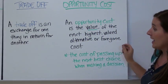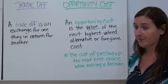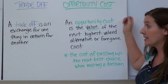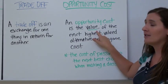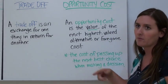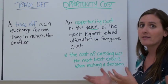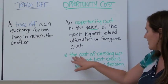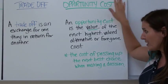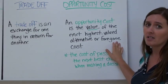A trade-off is an exchange for one thing in return for another — what you give up in order to make one choice. An opportunity cost is the value of the next highest value alternative, or foregone cost. So if you make a choice and you give up something, what is the value of that one thing? It's the cost of passing up the next best choice when making a decision. Basically, the trade-off is the thing you give up, and the opportunity cost is the value of the thing you give up.